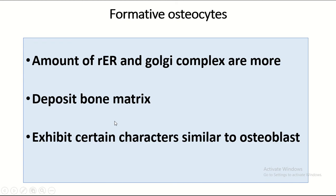The formative osteocyte: the amount of rough endoplasmic reticulum and Golgi complex are more. They deposit bone matrix and exhibit certain characteristics similar to the osteoblast.